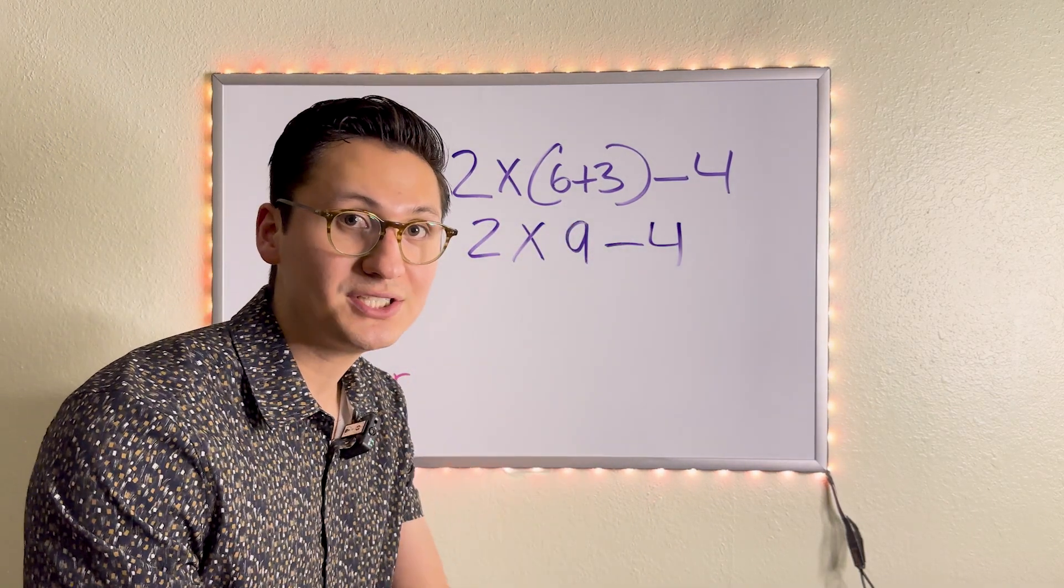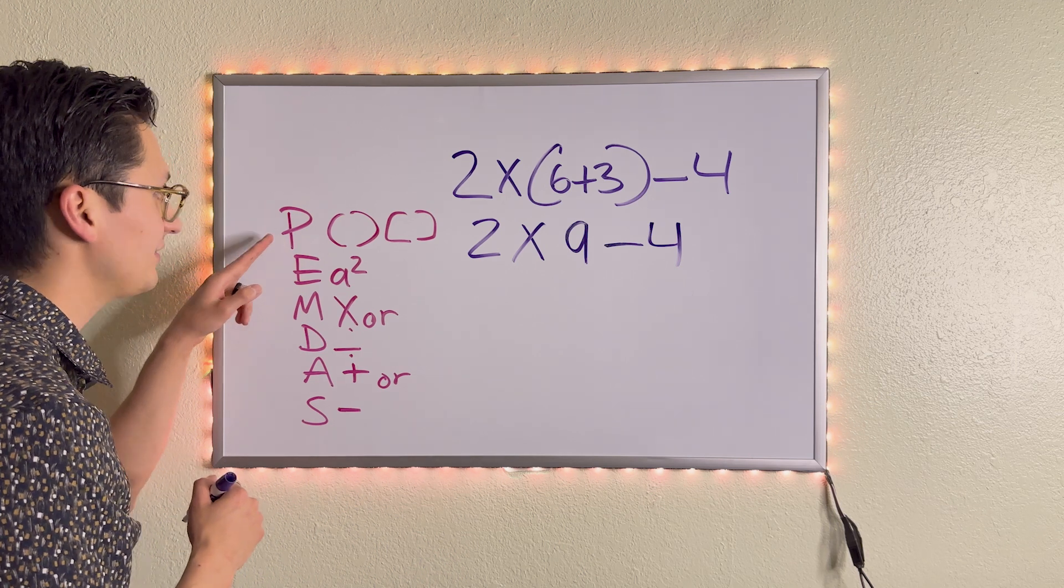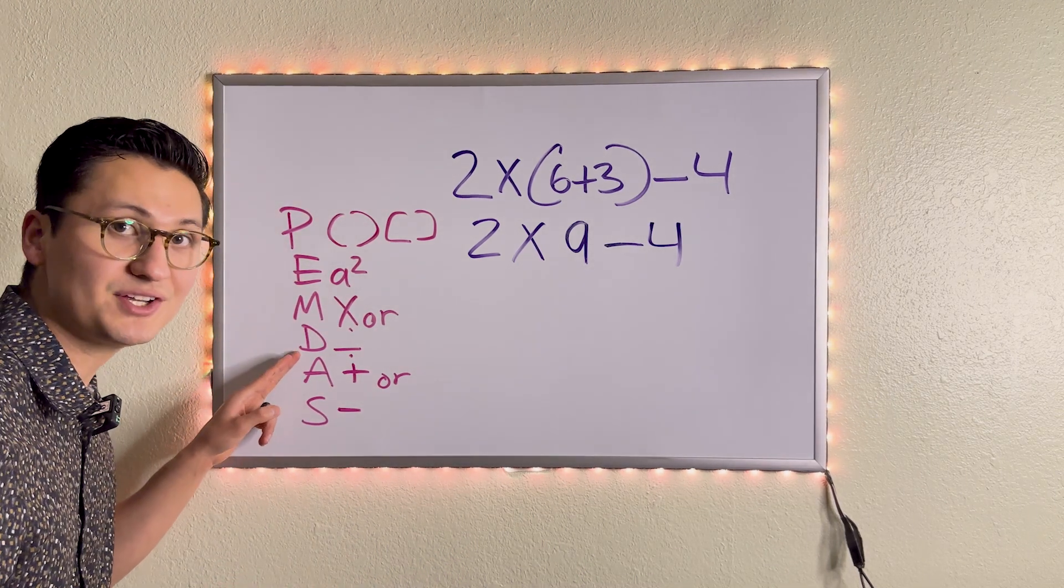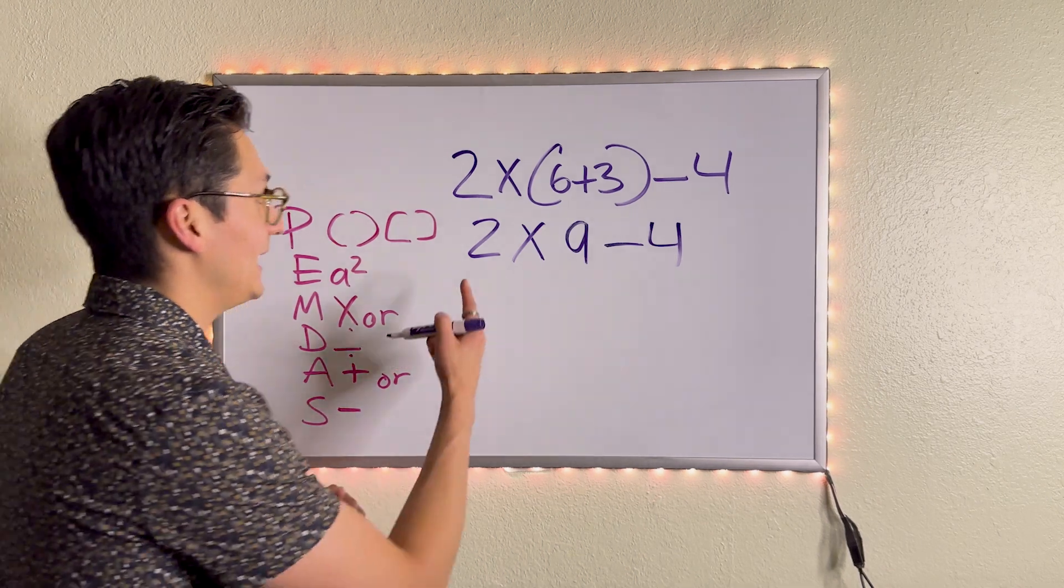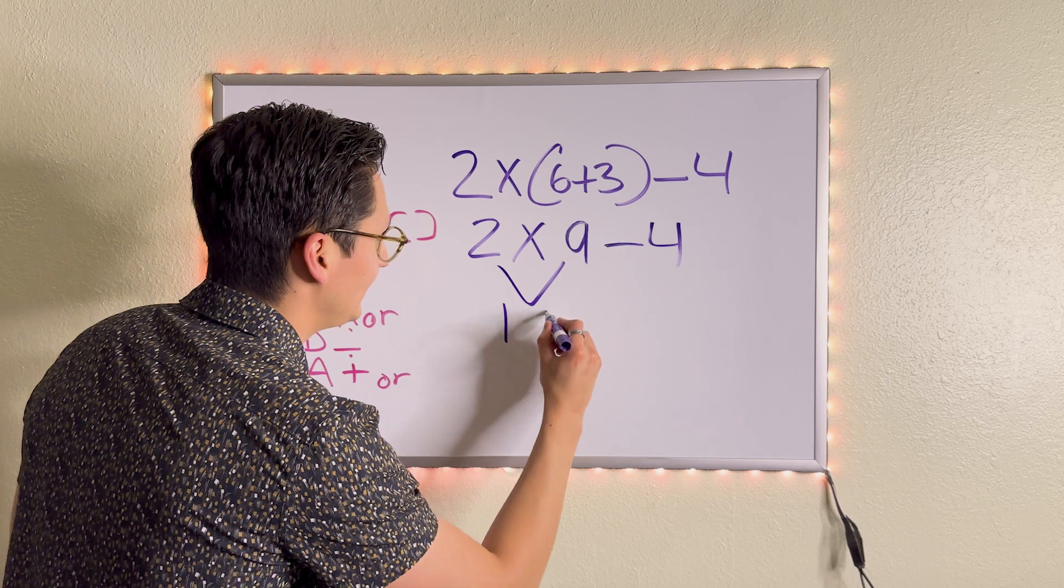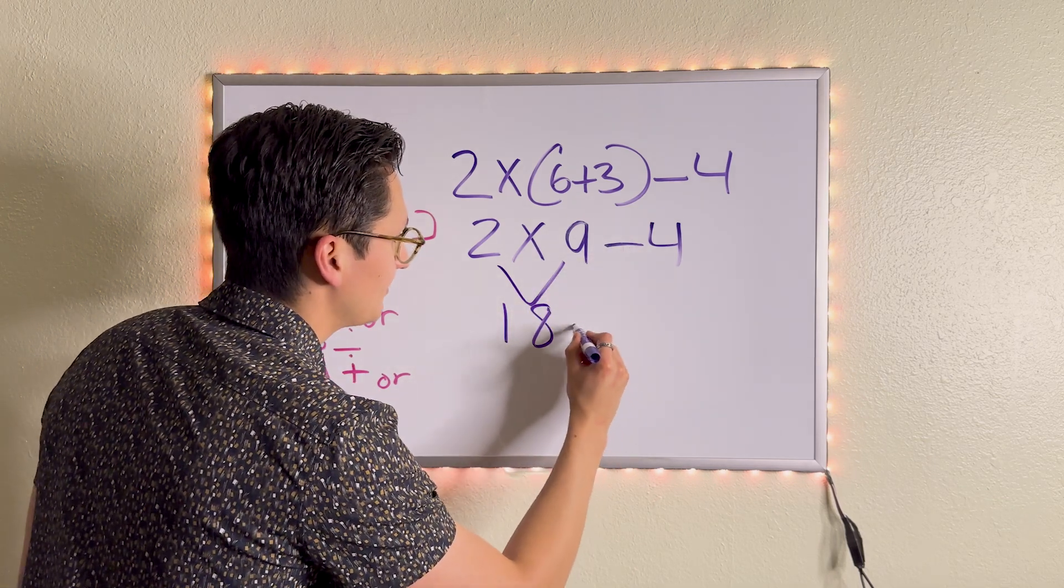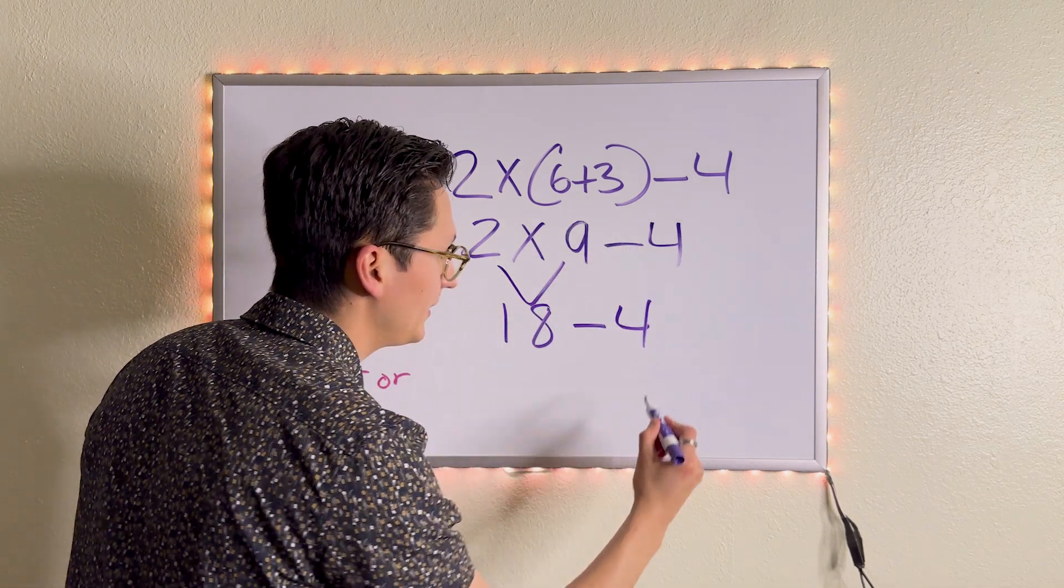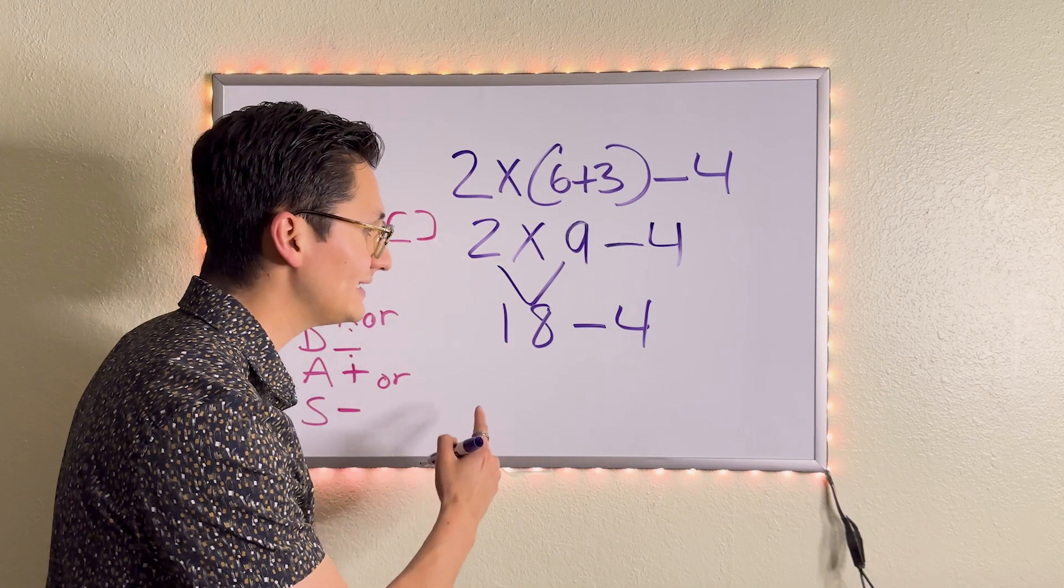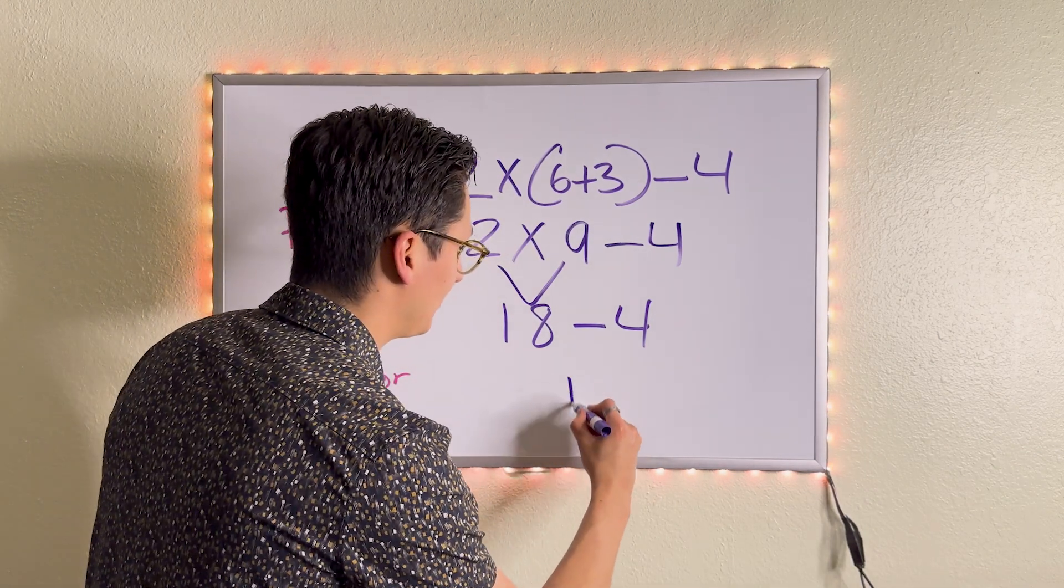Now we have to decide what to do next. We don't have parentheses. We don't have exponents. Do we have multiplication or division? Yes, we do. And it's right here. So that's what we do next. Two times nine is 18. I bring down the subtract. I bring down the four. And all that is left to do is subtract. 18 minus four is 14.